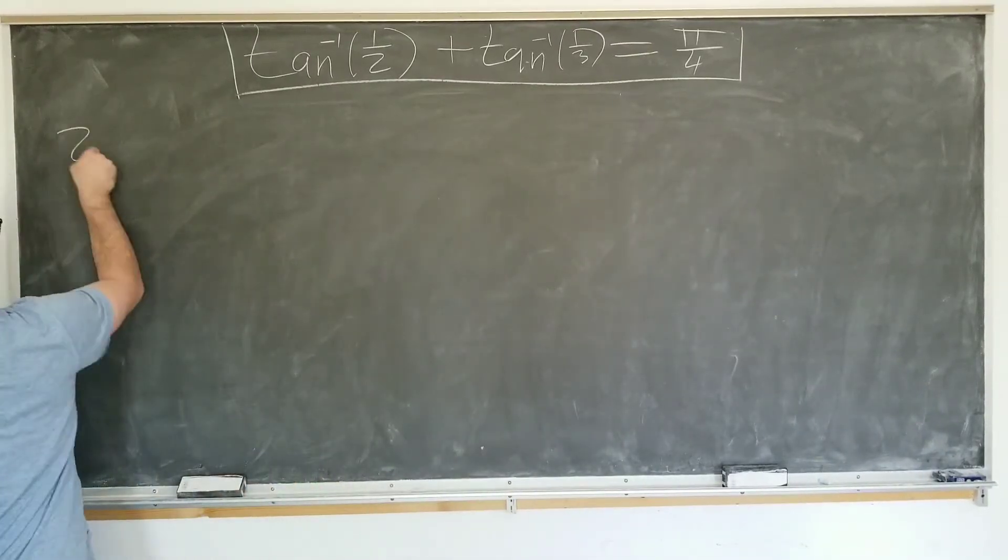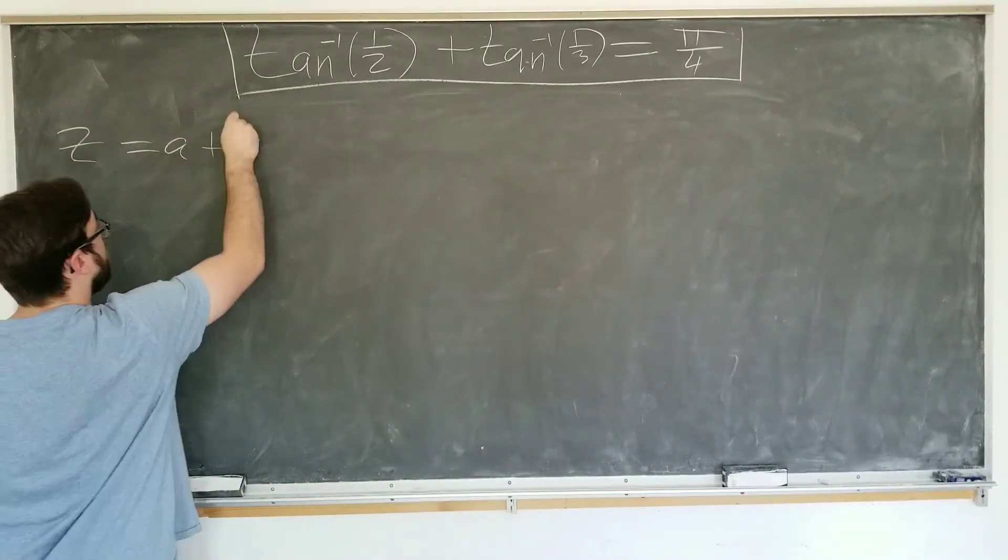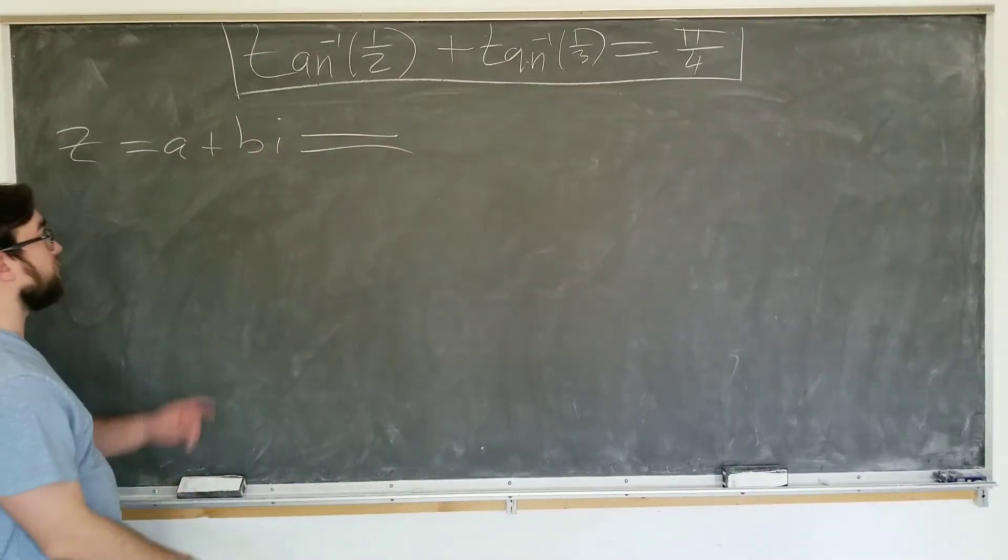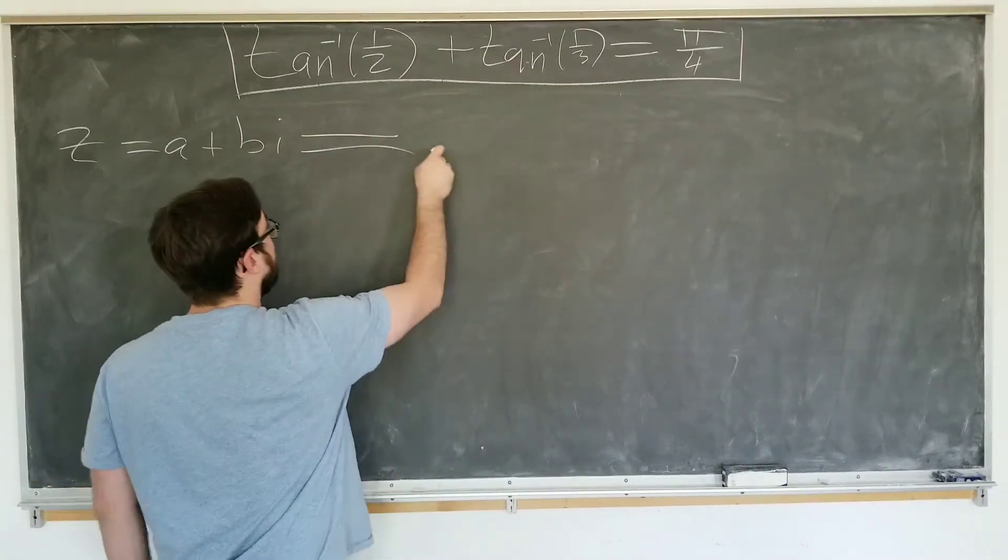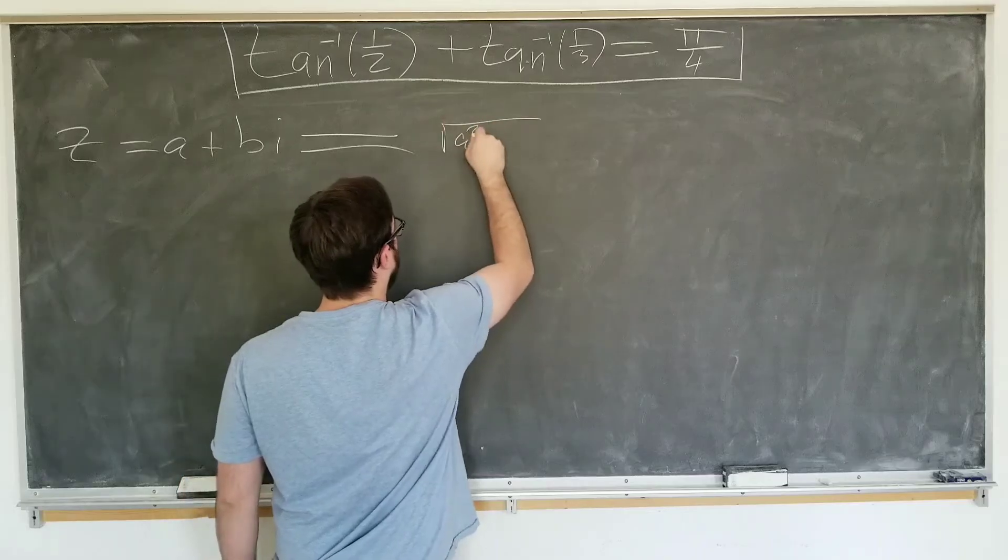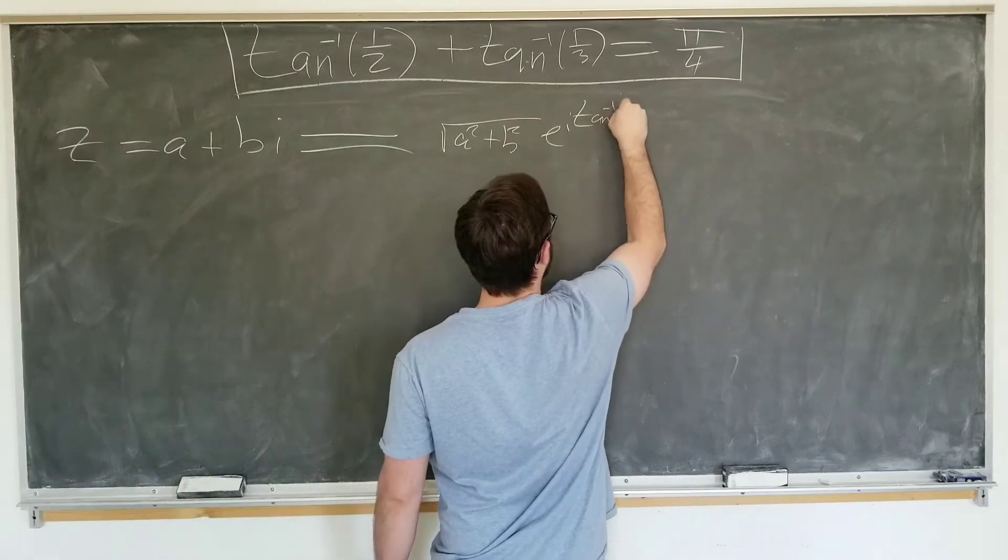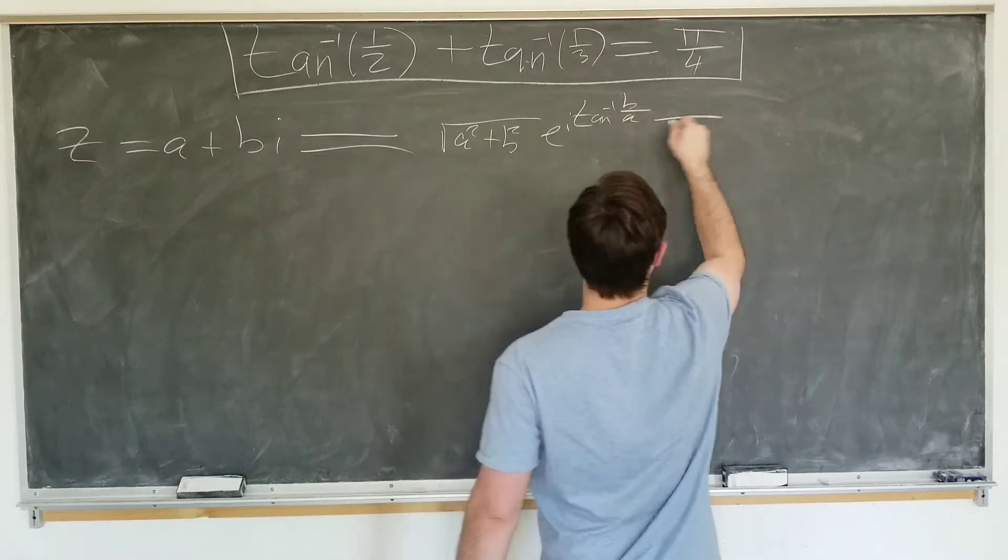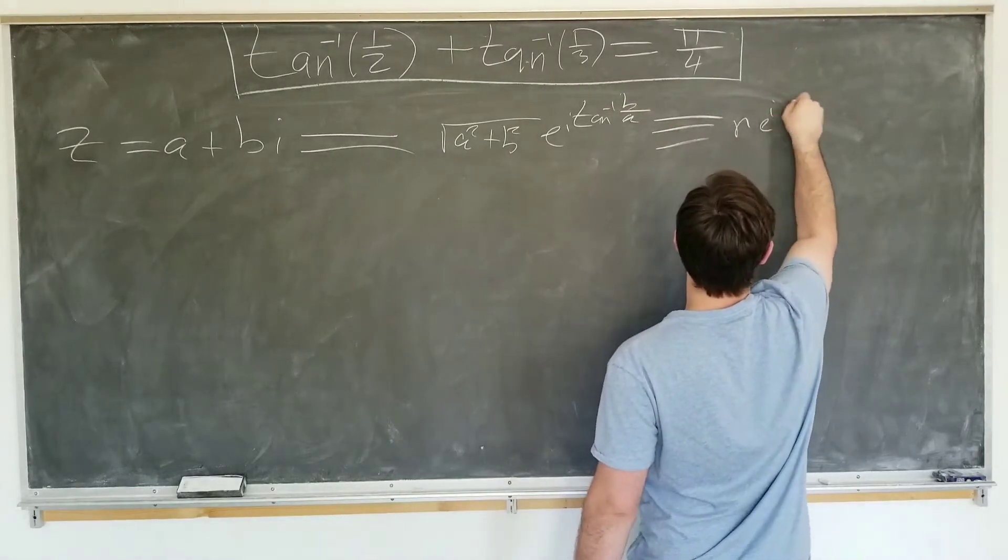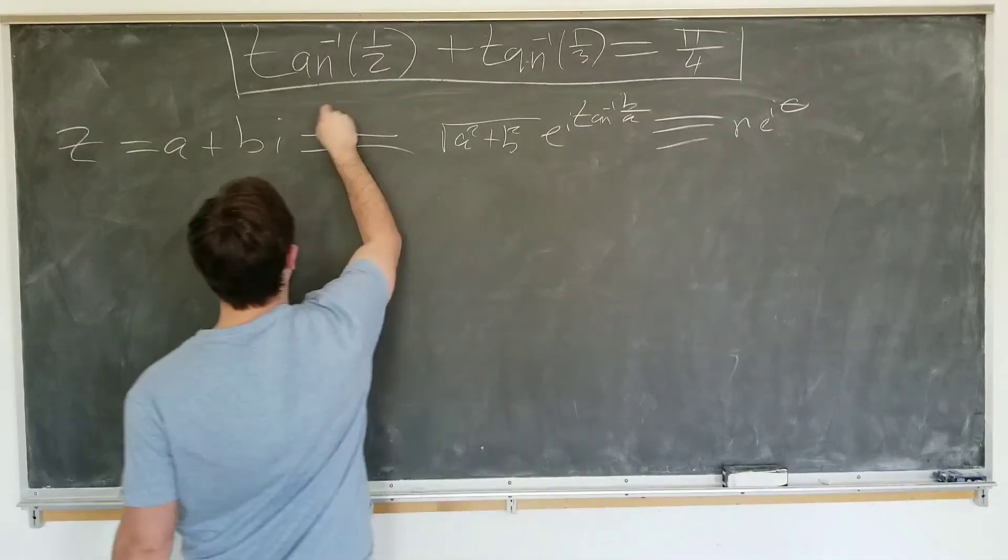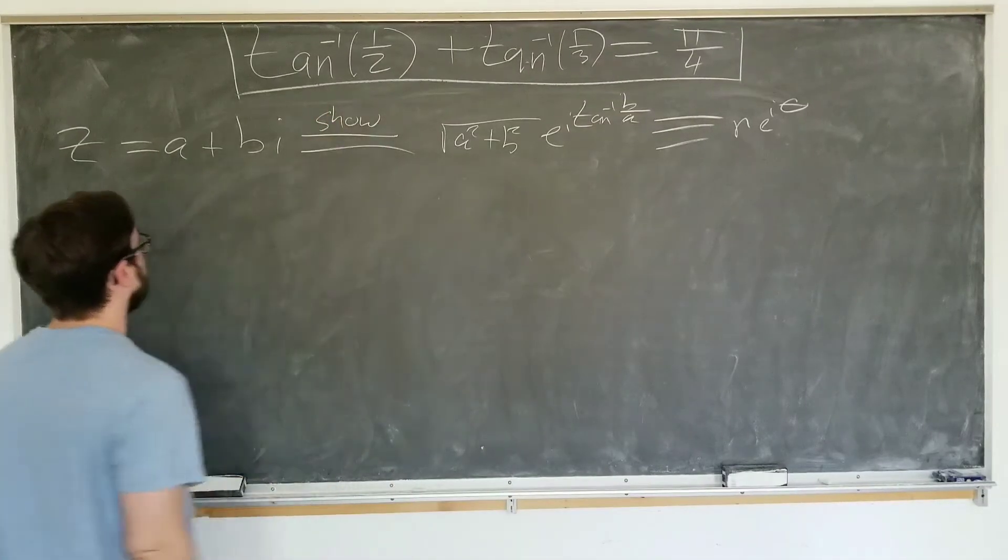Go ahead and review Cartesian and polar forms of complex numbers. Any number of the form a plus bi can also be rewritten in the following form, which is defined as r e to the i theta. We're going to show these two equations are the same.